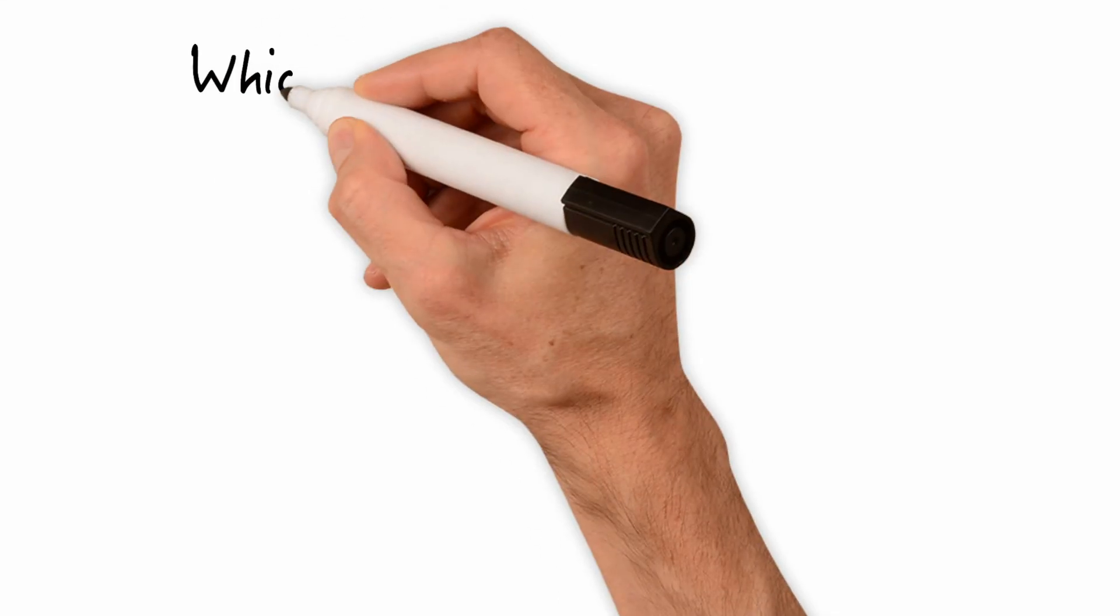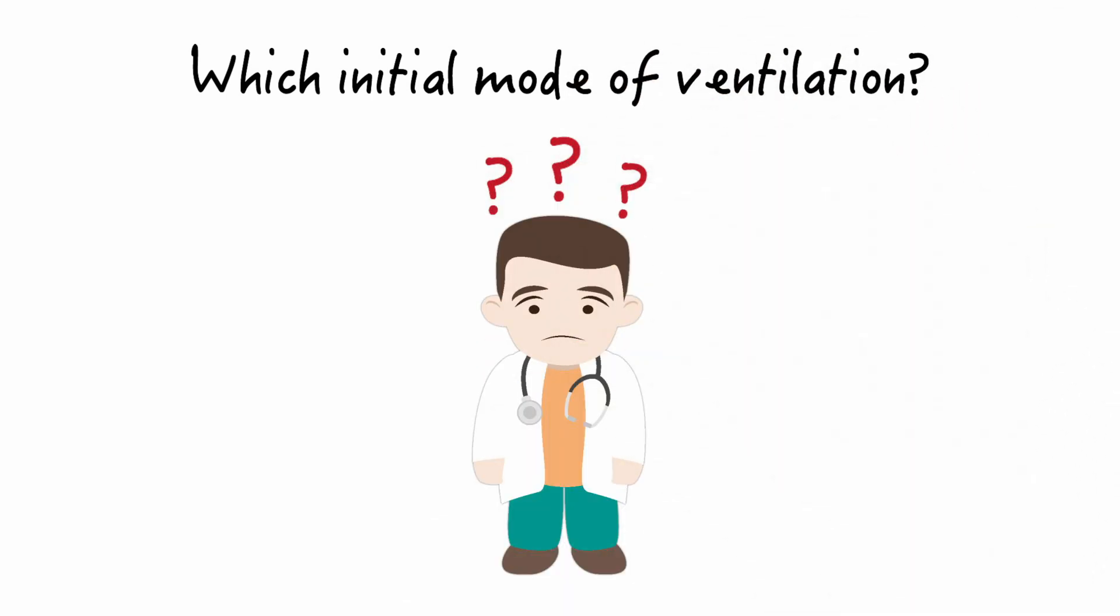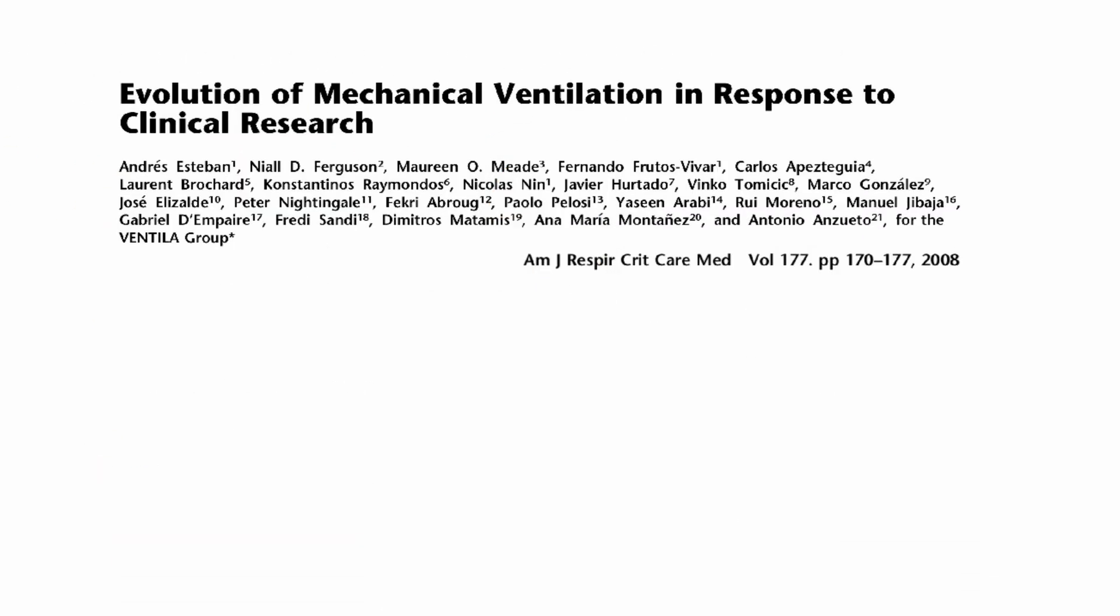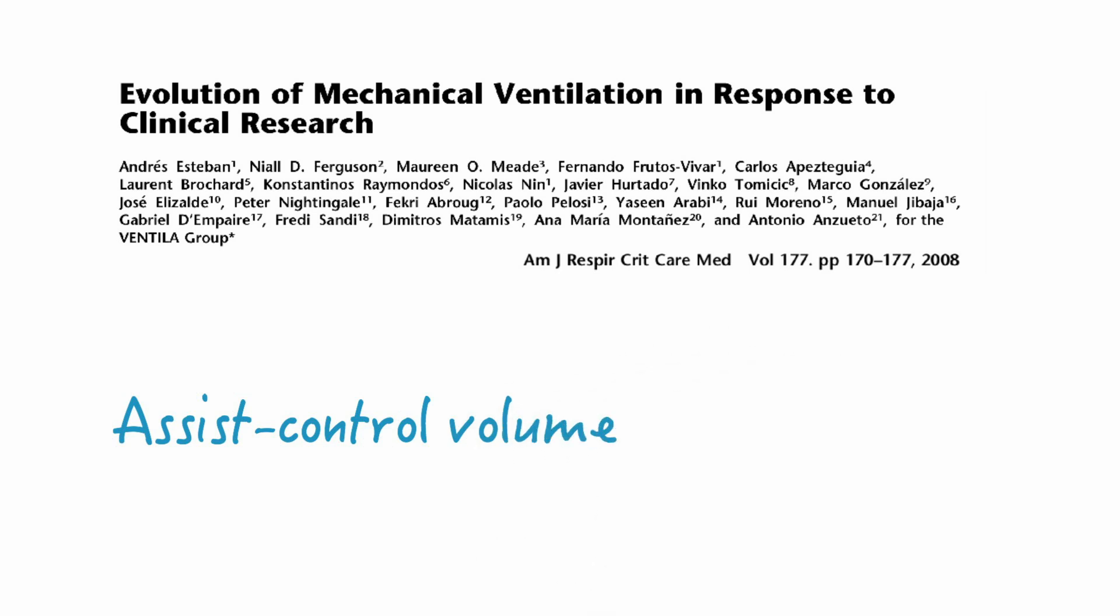Now that we have established the need of a mechanical ventilator, let's discuss which initial mode should be selected. Although there are numerous options for selecting the initial mode, according to Esteban, Ferguson, and Meade, assist-control volume ventilation is the most common ventilator mode used throughout the world as the primary initial mode of ventilatory support.